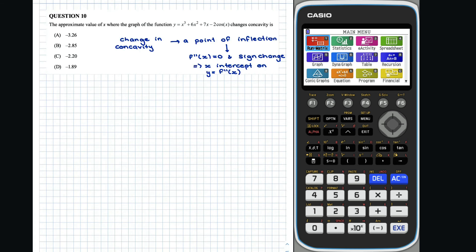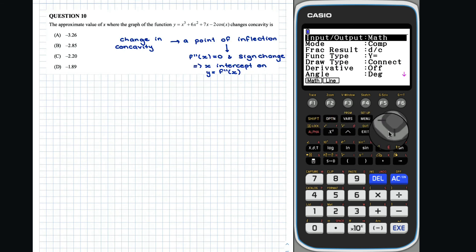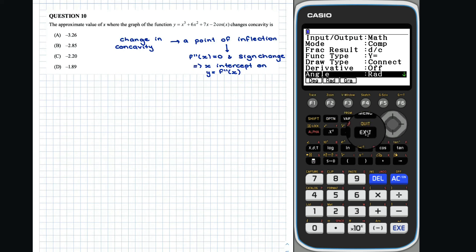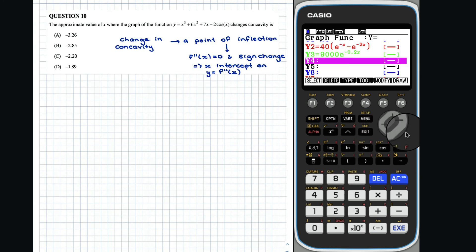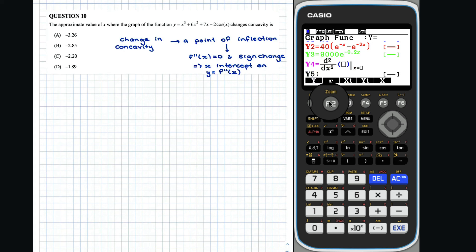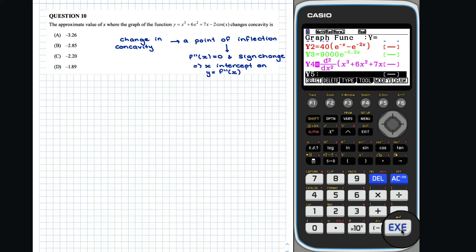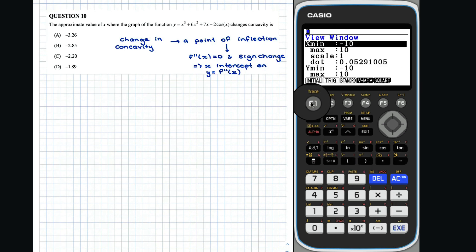Before graphing f double dash of x, we need to check the calculator is set up in radians. So we go shift, setup. My calculator is currently set in degrees, so we need to set it to radians. We can graph f double dash of x by finding the second derivative using option, calc and f2. We will now check to make sure that our view window is in the initial setting.